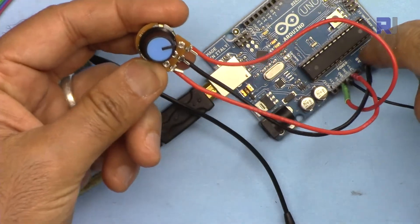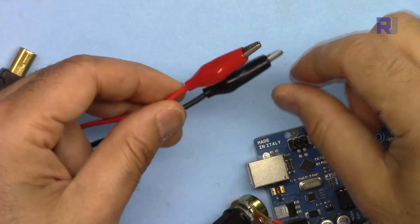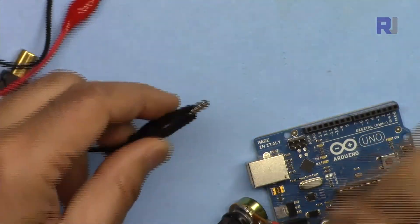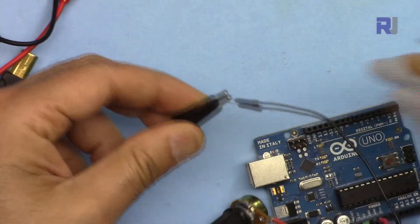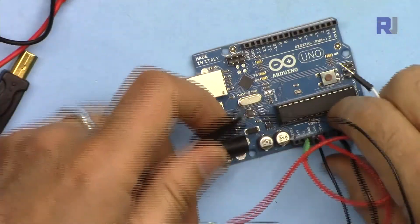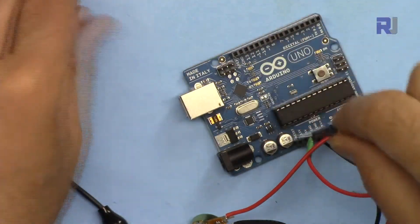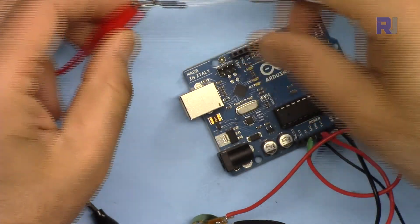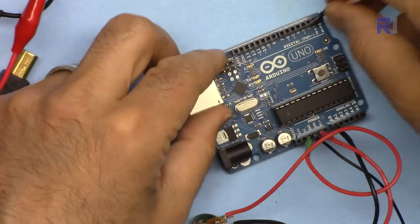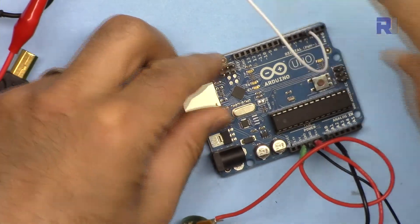The middle pin is connected there, and here these two wires are connected to my oscilloscope. One will be connected to the ground of Arduino and the other one will be connected to different pins as we proceed.